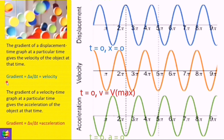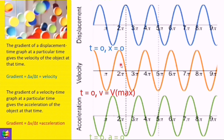The only difference is that the velocity-time curve starts at a different point in the cycle, as seen in the orange graph. This is because at time t equal to zero the oscillator has maximum velocity.